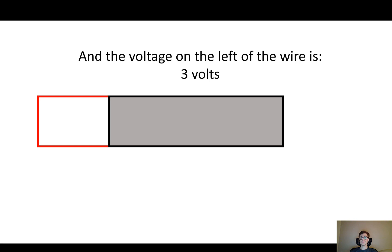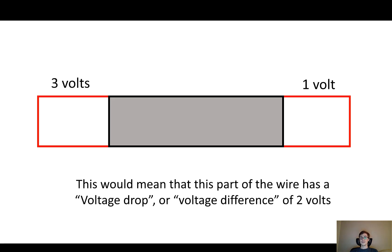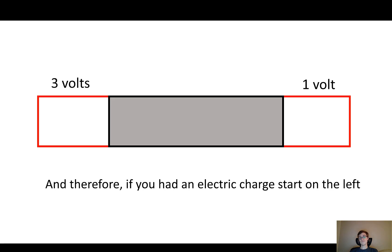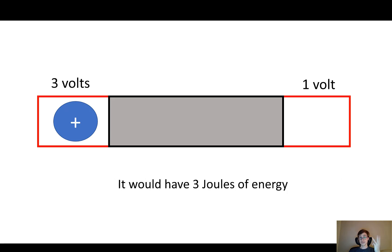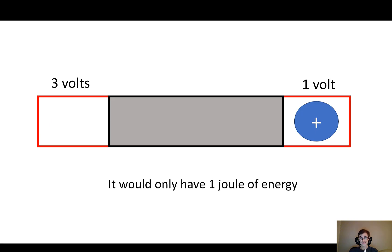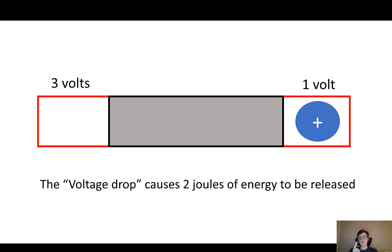So for example, let's say that I have a wire. On the left side of the wire I measure three volts, and on the right side I measure one volt. That means there are different amounts of energy that a charge would have on the left and on the right. If I move an electric charge through the wire, it will experience a voltage drop of two volts. So if I have an electric charge that's one Coulomb and I put it on the left, it has three joules of energy, but on the right it would have one joule. Energy is not created or destroyed, so when the charge moves through the wire the voltage drop causes two joules of energy to be released. Basically, this wire took the electrical energy from the charge and turned it into something else — maybe light, heat, or motion.